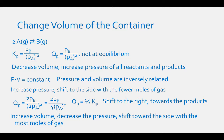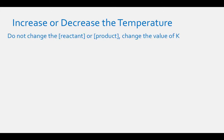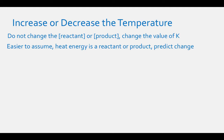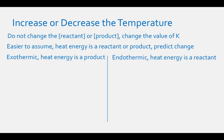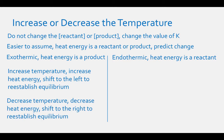What happens if we increase or decrease the temperature of an equilibrium system? In this case, we do not change any of the reactants or products — we instead change the value of K. It is easier to assume that heat energy is a reactant or product and predict the direction of the reaction that way. For an exothermic reaction, heat energy is a product; for an endothermic reaction, heat energy is a reactant. If we increase the temperature of an exothermic reaction, we increase the heat energy and the reaction will shift to the left. If we decrease the temperature of an exothermic reaction, the reaction will shift to the right.